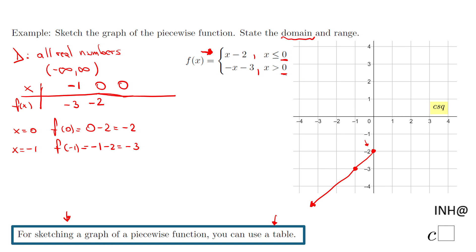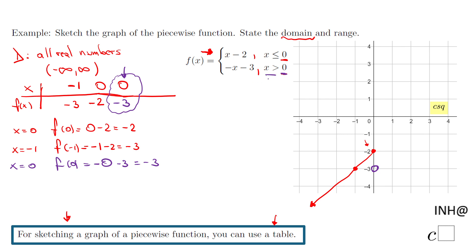For the second piece, I'll use x equals 0 as a reference to see where this piece starts. Evaluating: f(0) using the second piece gives negative 0 minus 3, which is negative 3. However, this point (0, −3) is not actually included — it's not legal — so I'll place an empty dot there, because the second piece requires x strictly greater than 0.